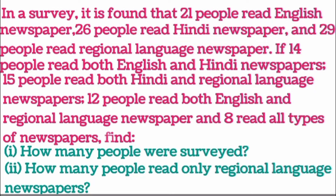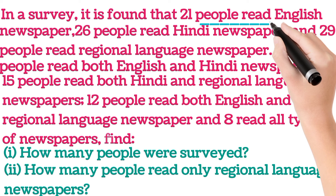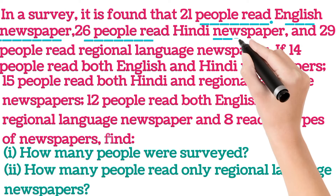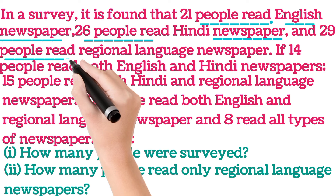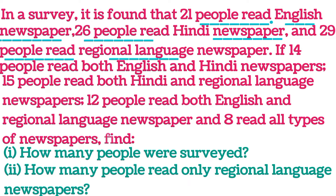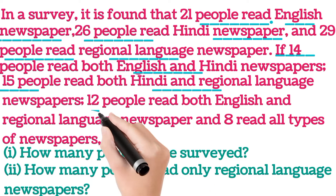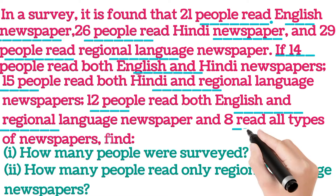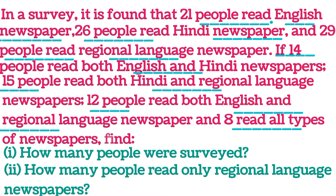Here is a question in which it is stated that in a survey it is found 21 people read English newspaper, 26 people read Hindi newspaper, and 29 people read regional language newspapers. If 14 people read both English and Hindi newspapers, 15 people read both Hindi and regional language newspapers, 12 people read both English and regional language newspapers, and 8 read all types of newspapers, then find how many people were surveyed and how many people read only regional language newspapers.